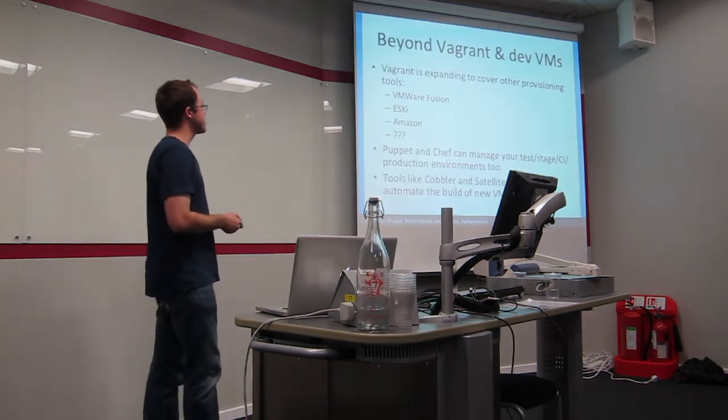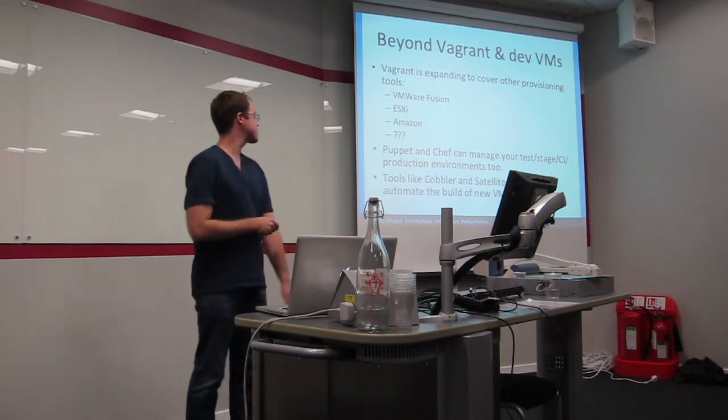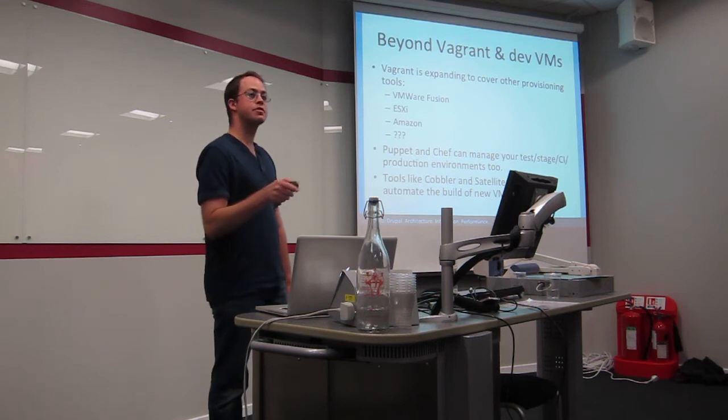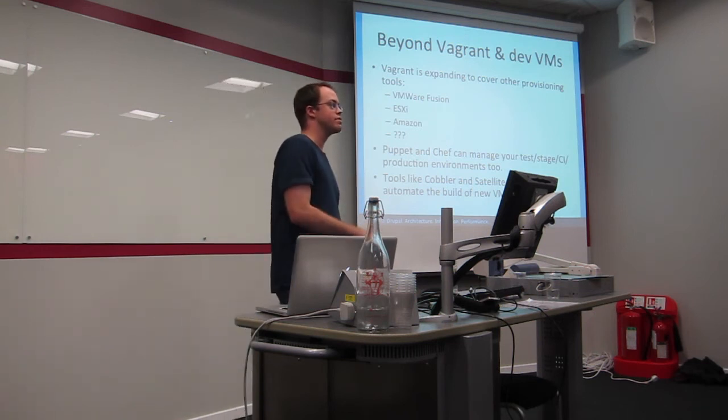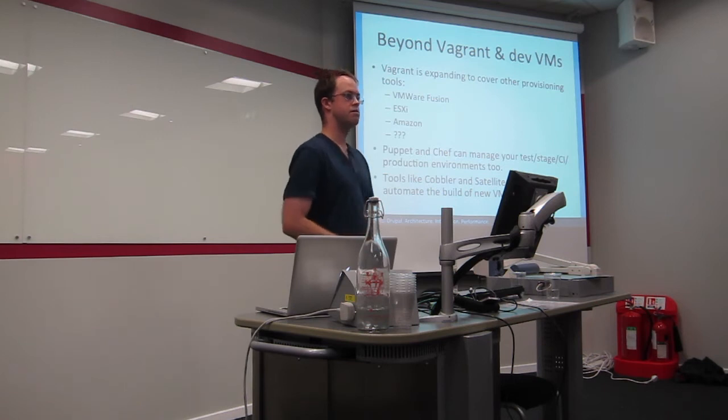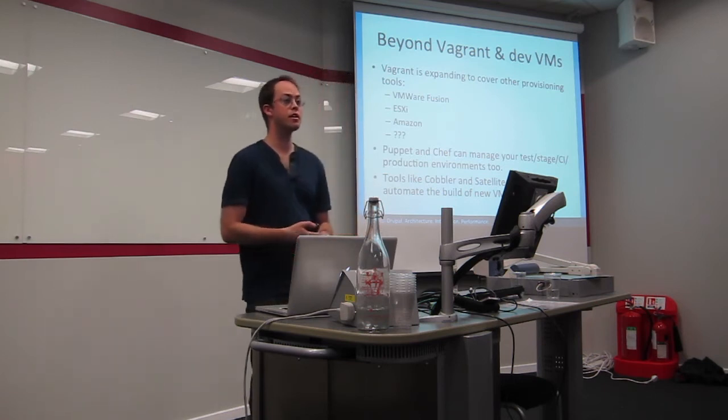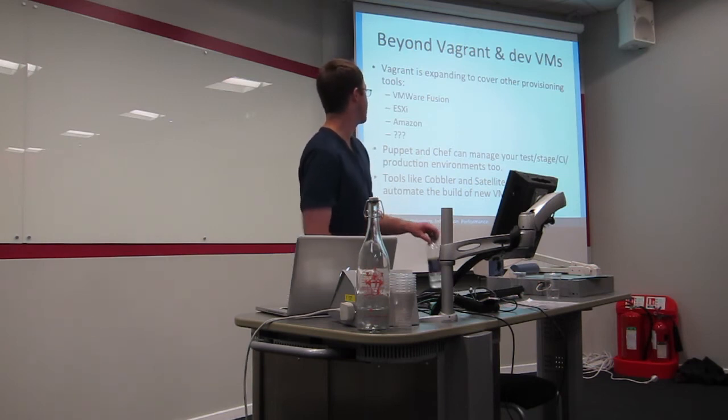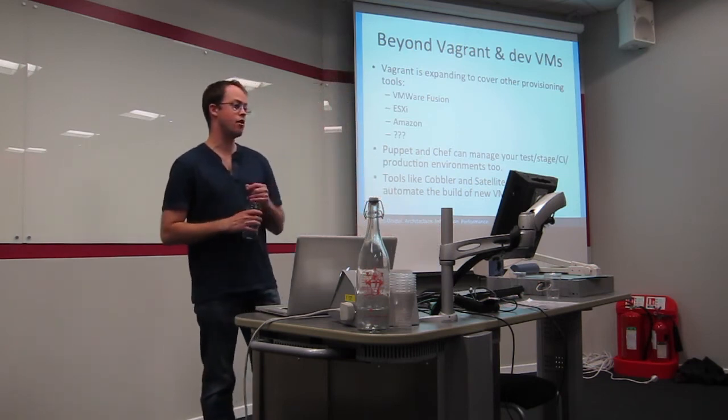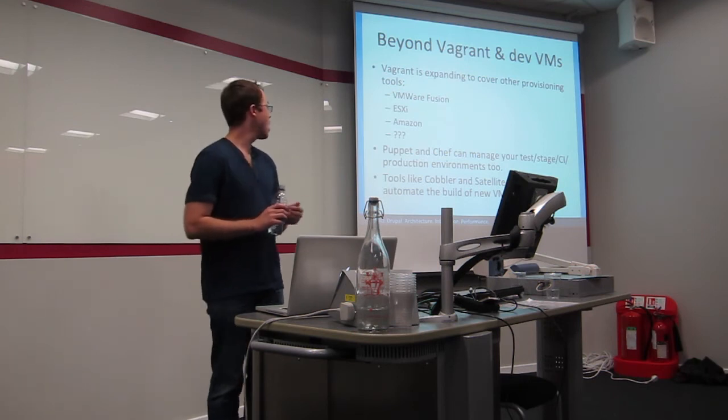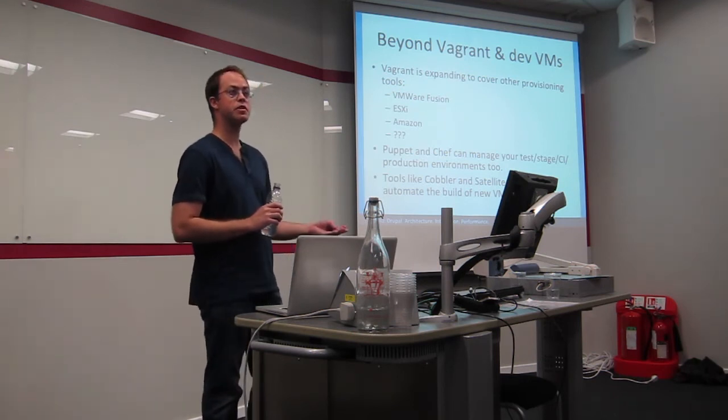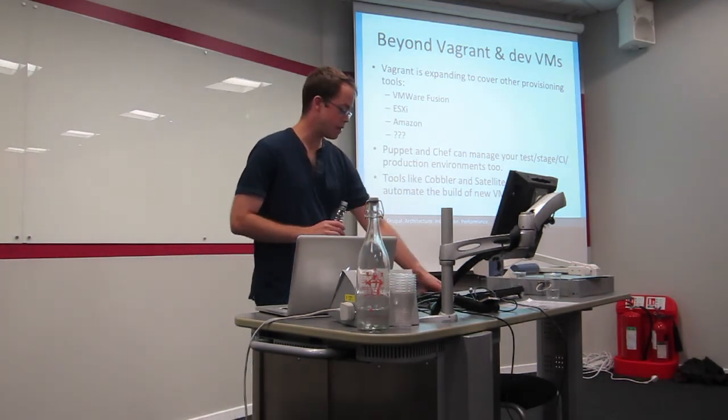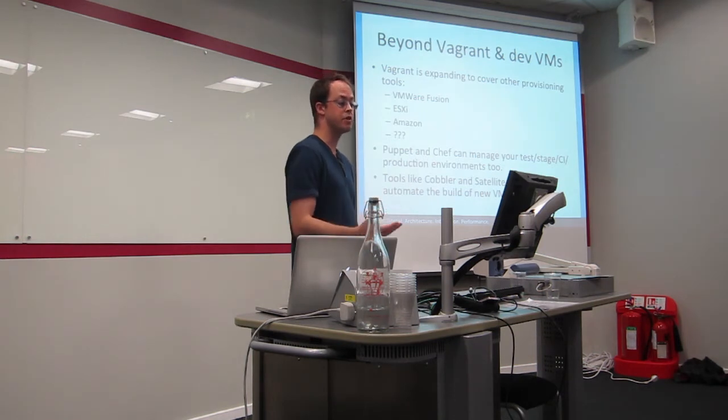And like I said Vagrant is starting to cover other things. So VMware, ESXi, Amazon EC2. The same Puppet and Chef scripts that you use for your Vagrant box. You can actually start rolling out to manage your test, your stage, your CI. You can manage any environment with them you like. I wouldn't use Vagrant to manage the provisioning of things in production. Cobbler is a much better tool for that. For managing virtual machines in prod. And Satellite is a Red Hat specific tool. That again is designed just to provision a virtual machine from scratch.